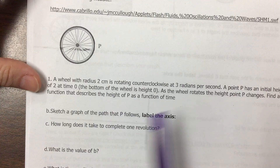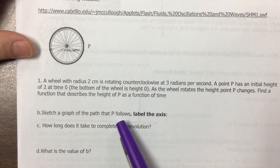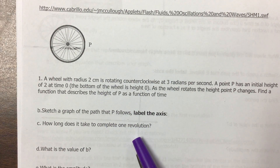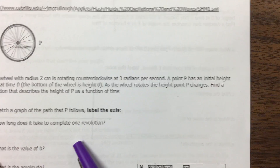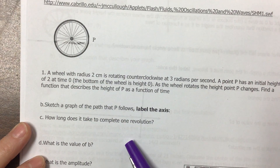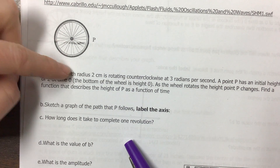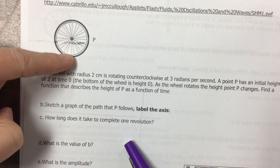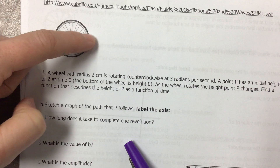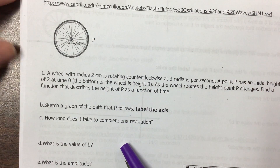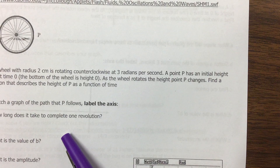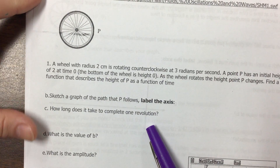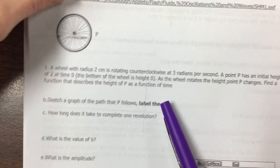A wheel with radius 2 centimeters is rotating counterclockwise at 3 radians per second. Point P has an initial height of 2 at time 0, and the bottom of the wheel is height 0. So here this is going to be a height of 0, here's a height of 2. As the wheel rotates, the height of point P changes. Find a function that describes the height of P as a function of time.